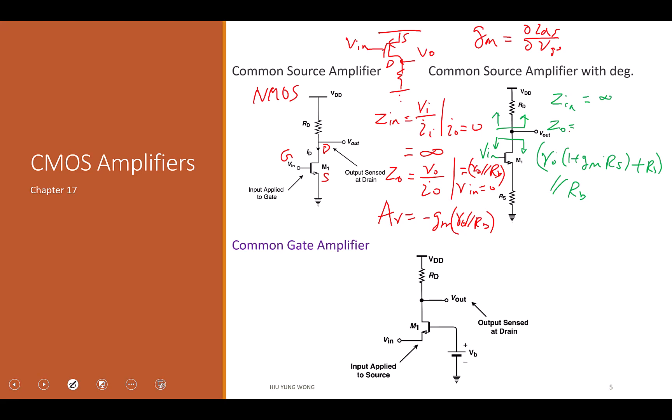It's an amplifier. Again, we repeat what we have been doing before. Look at the circuit, NMOS. Identify the terminals. This must be the gate. This is drain because it's higher potential. This is NMOS. This is the source, right?